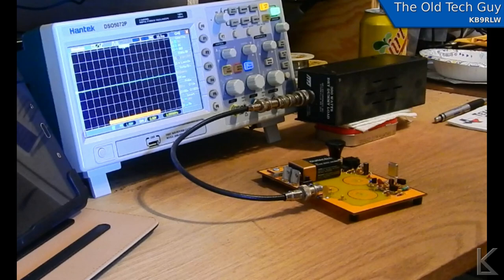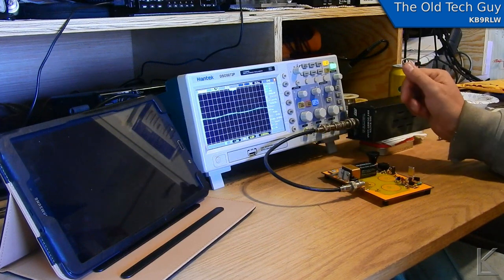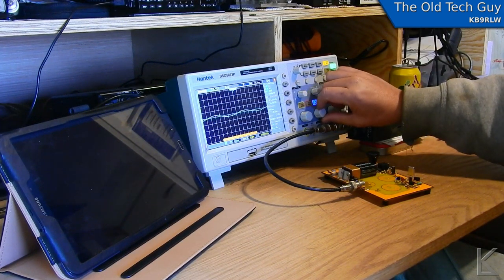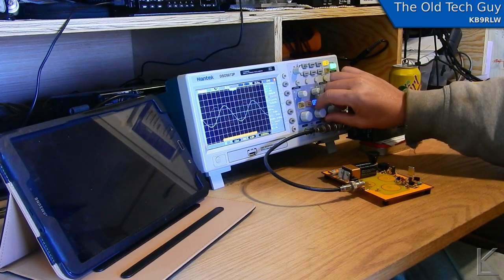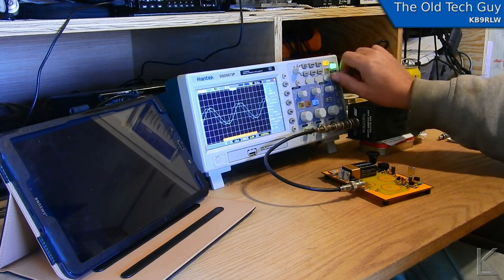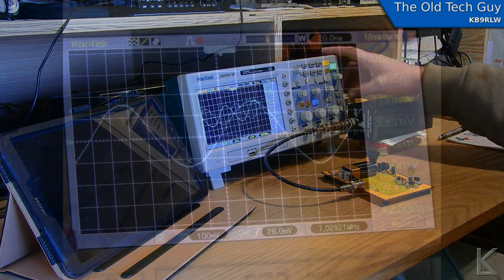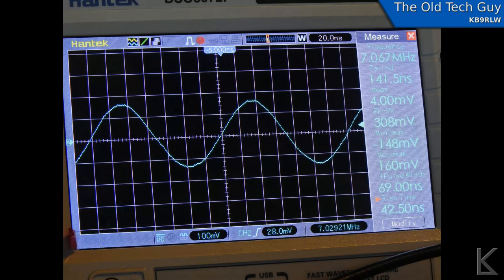So I turned on the Cricket and right away I see a signal. Now that's the oscillator leakage that's coming through. So I went ahead and recorded that voltage level here and as you can see from this still, we were at 308 millivolts peak to peak. It's over there on the right just below that mean of four millivolts. So that's our peak to peak voltage of the oscillator signal that's leaking through.